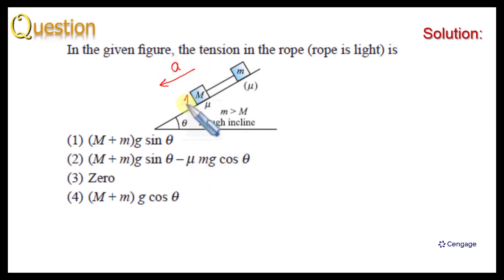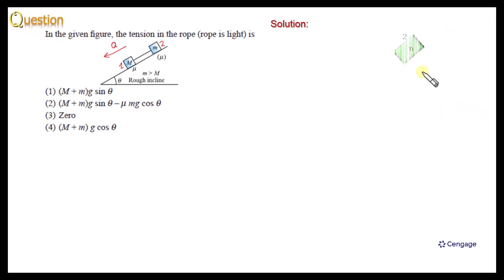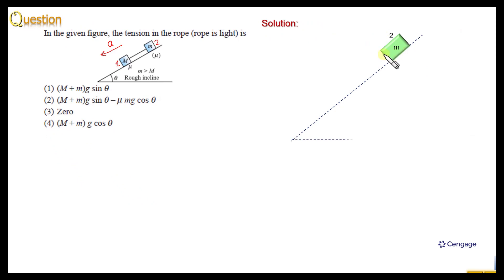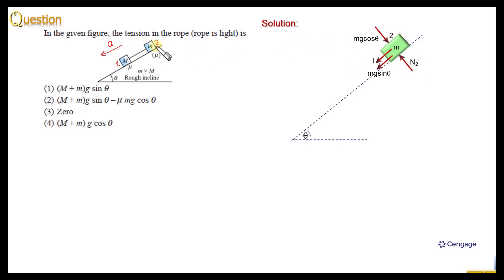Say this block is block number one and this is block number two. Now we can draw the free body diagram. First, consider block number two. The component of the weight we can consider perpendicular to the incline plane and parallel to the incline plane. This is the normal reaction, this is the tension force, and since it is sliding down, friction will be in the upward direction and kinetic in nature.